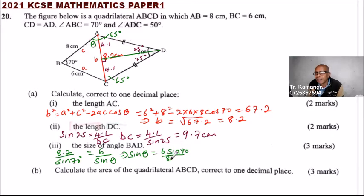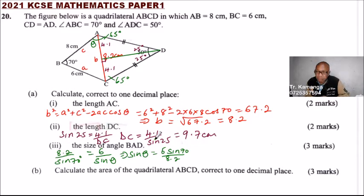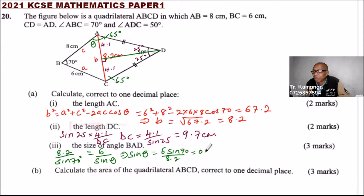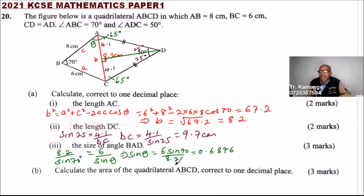Using the calculator: 6 multiplied by the sine of 70 equals 5.6384. Dividing by 8.2, I'm getting sine theta equals 0.6876, to four decimal places.